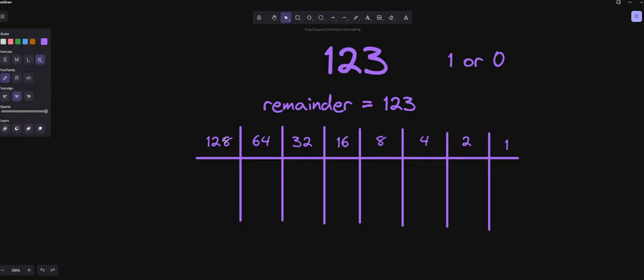Basically what we're going to do, we have this remainder. And we come in here and we say, okay, 128, is that larger or smaller than the remainder? Since it's larger than the remainder, we're going to go ahead and we're going to put a 0 here. And then we're just going to move on to the next cell.